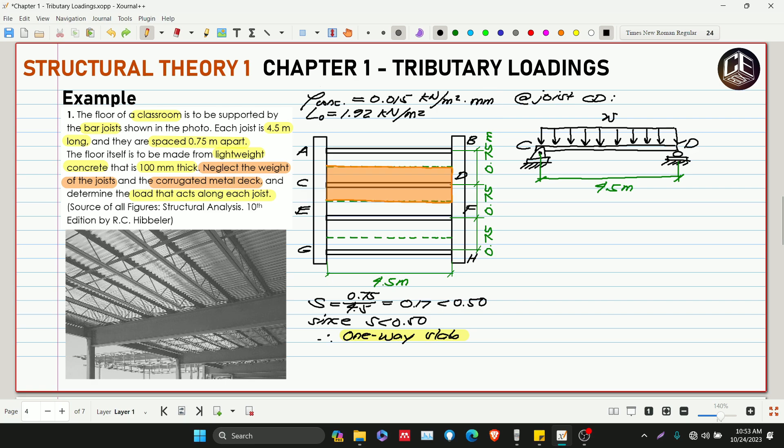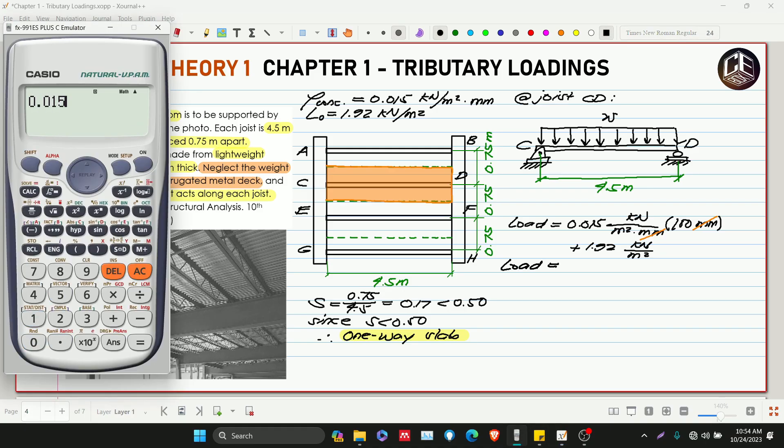The total loadings is equivalent to 0.015 kilonewtons per meter squared per millimeter, multiplied by the thickness of 100 millimeters to get kilonewtons per meter squared. Then add the live load, which is 1.92 kilonewtons per meter squared. So 0.015 times 100 plus 1.92 equals 3.45 kilonewtons per meter squared.